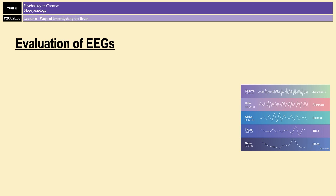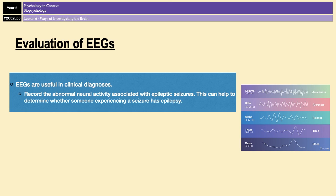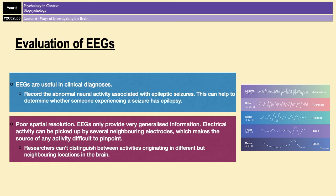EEGs are invaluable in the clinical diagnosis of certain conditions such as epilepsy, a disorder characterized by random bursts of activity in the brain that can easily be detected by an EEG. For example, if a patient is experiencing seizures, an EEG can help determine whether that patient has epilepsy or if the seizures have a different origin. However, unlike fMRIs, EEGs have very poor spatial resolution and can only provide very generalized information. Electrical activity can be picked up by several neighboring electrodes, making it very difficult to pinpoint the exact source of activity in the brain, so researchers can't distinguish between activity originating in different but neighboring locations.